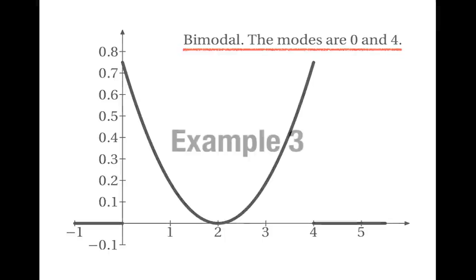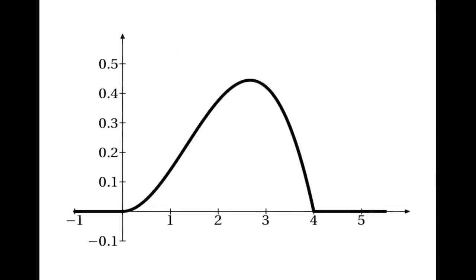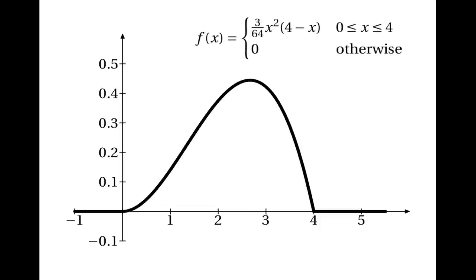My next example is a little bit harder. In this situation, we can't see the mode straight away — we need to know the definition of the probability density function. So let's look at the PDF and try to work out the mode. f(x) is (3/64) · x² · (4 − x) when x is between 0 and 4, and 0 otherwise.